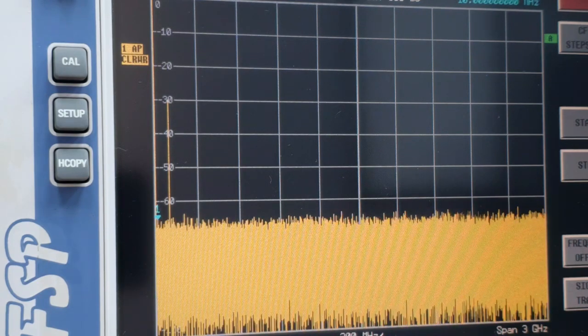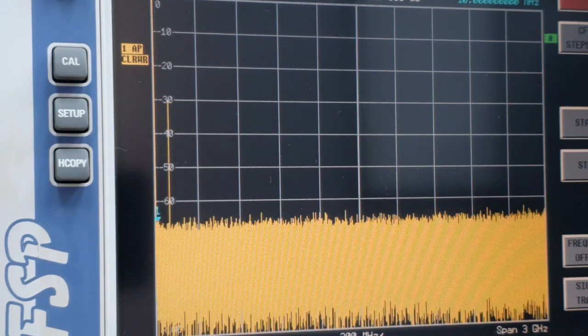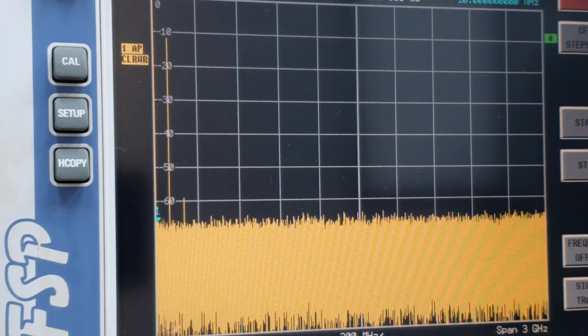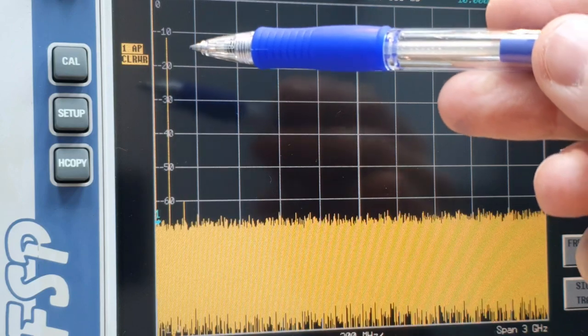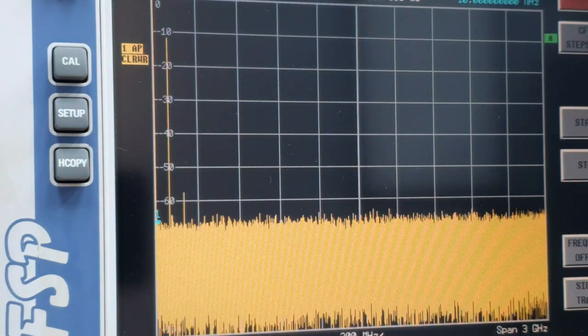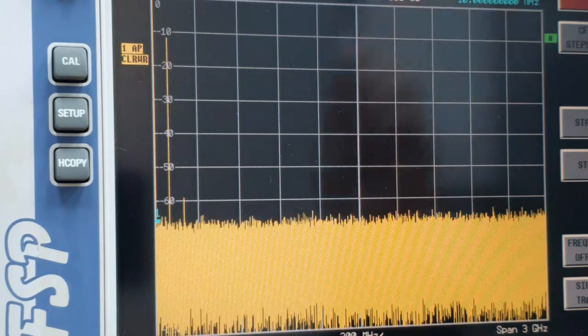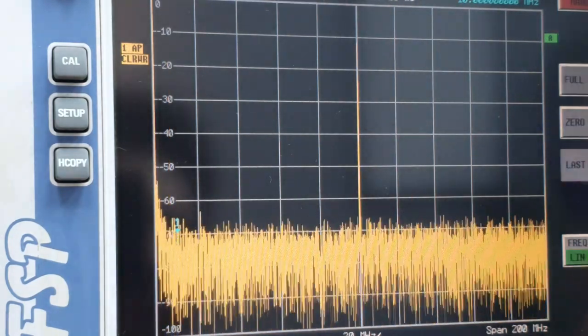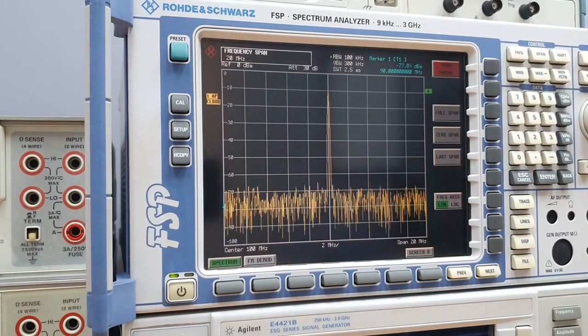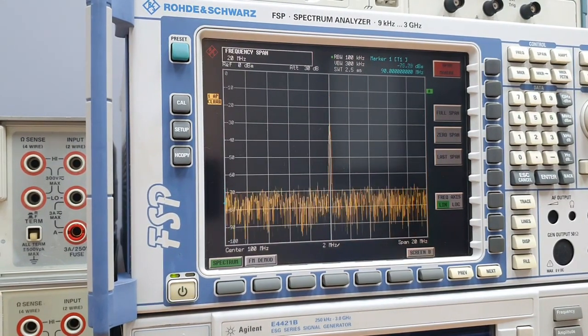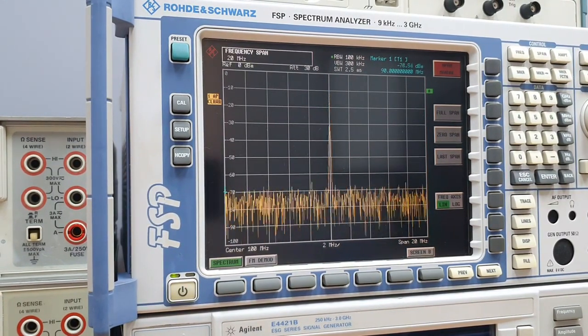So let's turn on the biasing, applying 5 volts, and we can see that now we have the signal almost at the full input power, negative 10 dBm. We have some loss in the cable and some loss in the switch. 100 MHz and a span of 20 MHz. Yeah, there is the signal. And we can turn on, off and turn on the signal using the bench power supply.